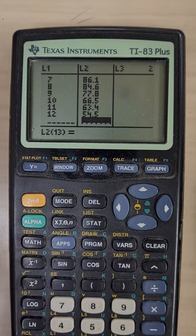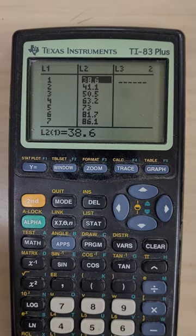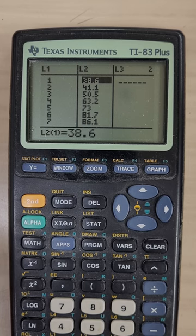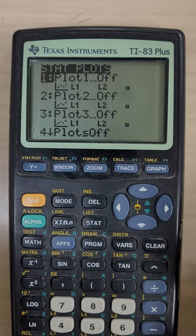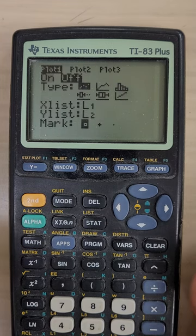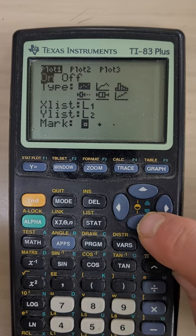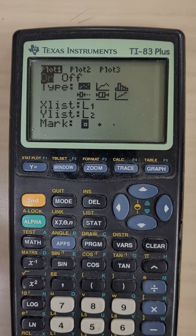And what we want to do now is want to get this data graphed. Now to get this data graphed, it's a little bit more work than just hitting the graph button. I'm going to need to turn on what's called the stat plot feature. So go to second Y equals, which is the stat plot setup screen. I'm going to choose number one and essentially I'm going to just turn on the scatter plot.